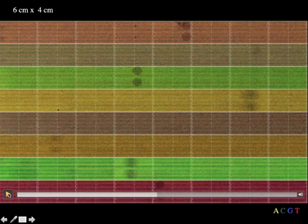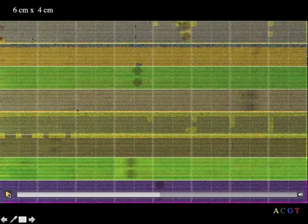This sequencing run reads 100 bases in the forward direction, 6 bases that are used as a sample label, and 100 bases in the reverse direction.